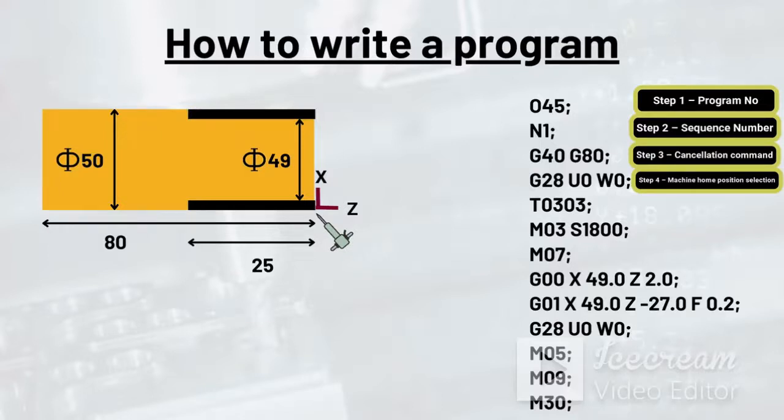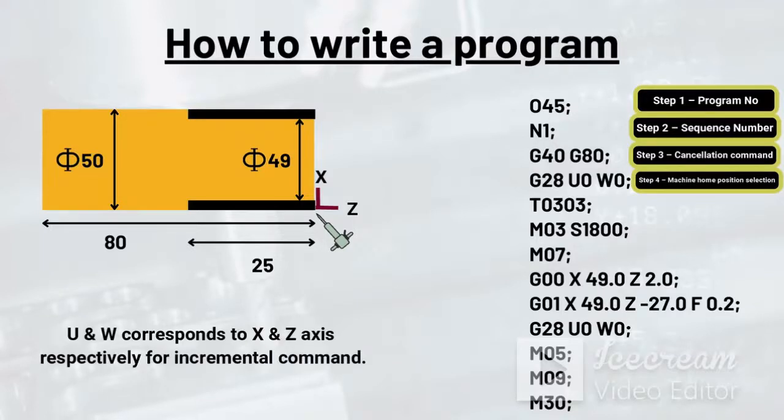Now for selecting machine's home position, we have command as G28 U0 W0. Now here U and W corresponds to the X and Z axis respectively for incremental command. As per a CNC lathe and turning operation is concerned, we generally use incremental commands so that tool takes the shortest route to complete its operation and ultimately reducing the cycle time.